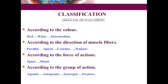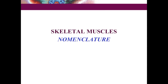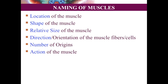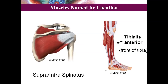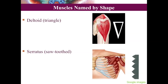This brings us to the end of classification of skeletal muscles — classified based on color, fascicular architecture, force of action, and group of action. Now let's understand how different skeletal muscles are named. Nomenclature of skeletal muscles is based on location, shape, size, direction, number of origin, and action.